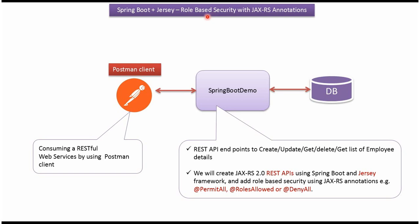In this video tutorial I will explain how to enable role-based security for REST API endpoints using JAXRS annotations. Here you can see a Spring Boot demo application which exposes REST API endpoints for creating, updating, getting, and deleting employee records, as well as getting a list of employee records. We will see how to enable role-based security for these endpoints using JAXRS annotations.